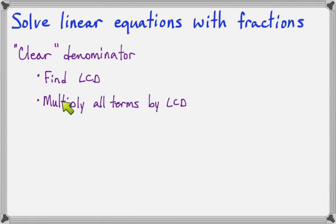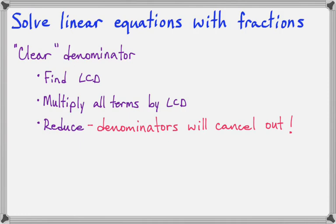So after we find the LCD, we're going to multiply all the terms in the equation by the LCD, and then we will reduce. And when you reduce, you'll find that all the denominators cancel out, and you'll be left with just a plain, ordinary linear equation that will be easy to solve.